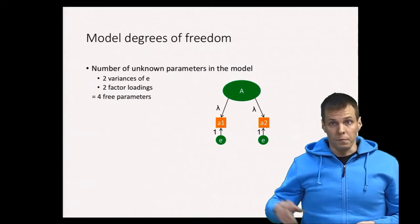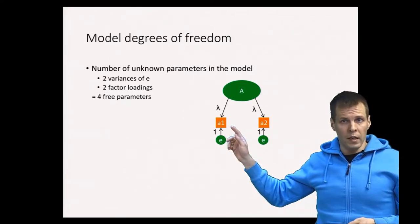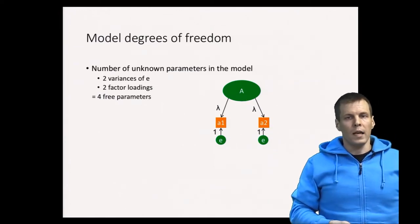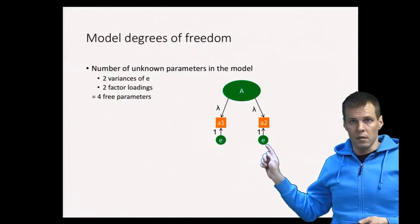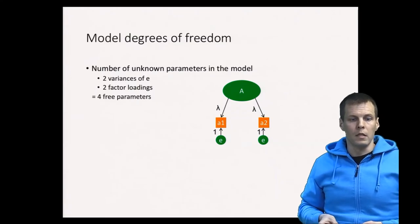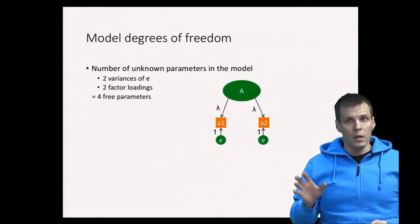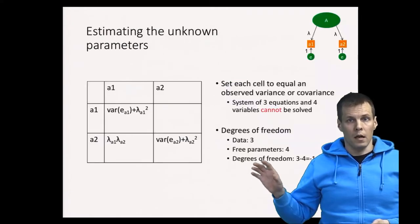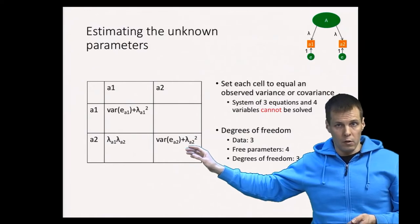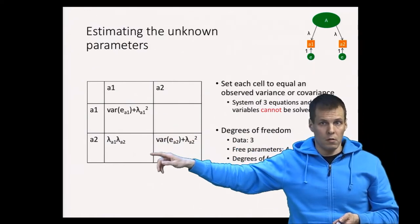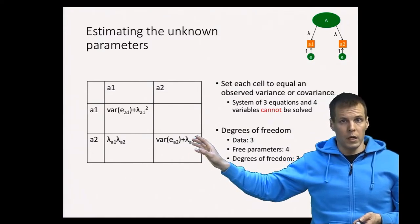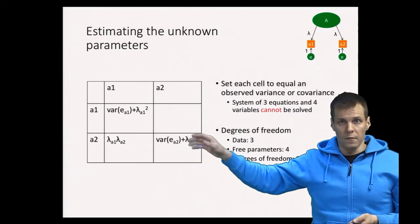Let's take a look at a model with just two indicators. We have indicator A1 and A2, and we want to estimate factor A. We have two error variances and two factor loadings, so four free parameters in total. When we estimate it, we calculate the model-implied correlations: two variances — variance of A2 and variance of A1 — and one correlation. So we have three unique elements of information from the data that we model using these four parameters.